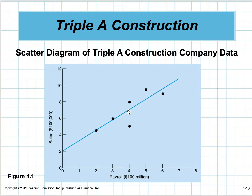This point here has a distance which is the error. Here's the predicted value when payroll is four, and here's the actual. We see there's a difference. There are two points for four, so we have two errors for four. There's only one error for five and one error for six.